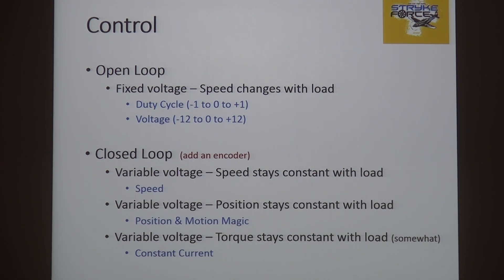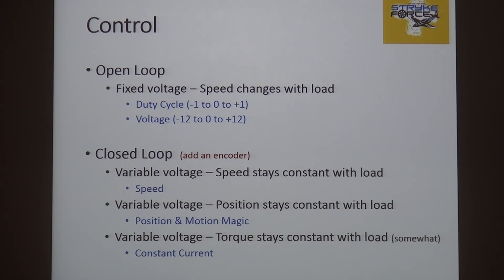Closed loop is where I actually want to make something specific happen — run a specific speed no matter what, or go to a specific position. That's where you have speed mode, position mode, motion magic, constant current — several different closed loop modes where I've added sensors to make things do a particular defined solution.